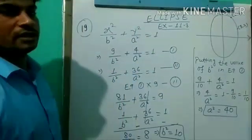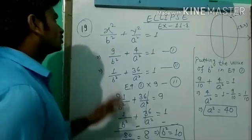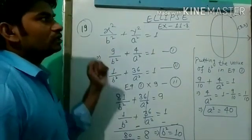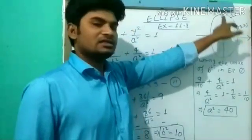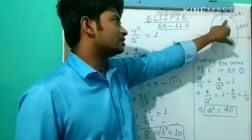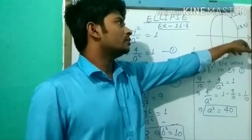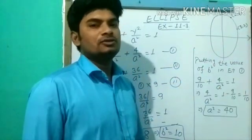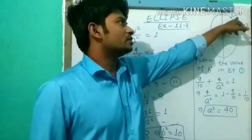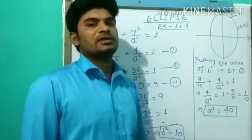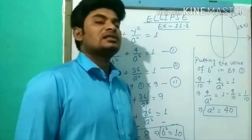Question number 19 states that there is an ellipse that is symmetric about the y-axis. The major axis is the y-axis and the minor axis is the x-axis. This ellipse passes through two points: (3,2) and (1,6). We need to find the equation of this ellipse.